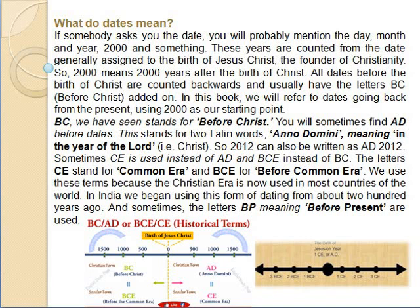How do dates work? If somebody asks you the date, you will probably mention the day, month and year — 2000 or something like that. These years are counted from the date generally assigned to the birth of Jesus Christ, the founder of Christianity. So '2000' means 2000 years after the birth of Christ. All dates before the birth of Christ are counted backwards and usually have the letters B.C. — Before Christ — added on. In this book, we will refer to dates going back from the present, using 2000 as our starting point. You will sometimes find A.D. before dates — this stands for two Latin words, 'anno domini,' meaning 'in the year of the Lord.' So 2012 can also be written as A.D. 2012. Sometimes C.E. is used instead of A.D., and B.C.E. instead of B.C. C.E. stands for Common Era and B.C.E. for Before Common Era. We use these terms because the Christian era is now used in most countries of the world. In India, we began using this form of dating from about 2000 years ago. Sometimes the letters B.P., meaning 'Before Present,' are also used.